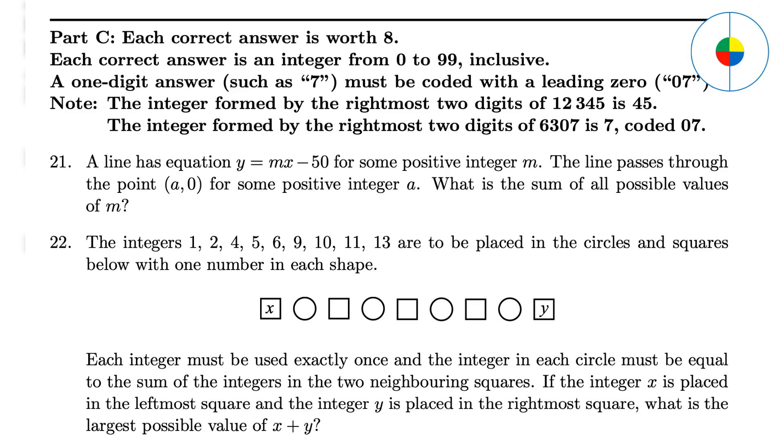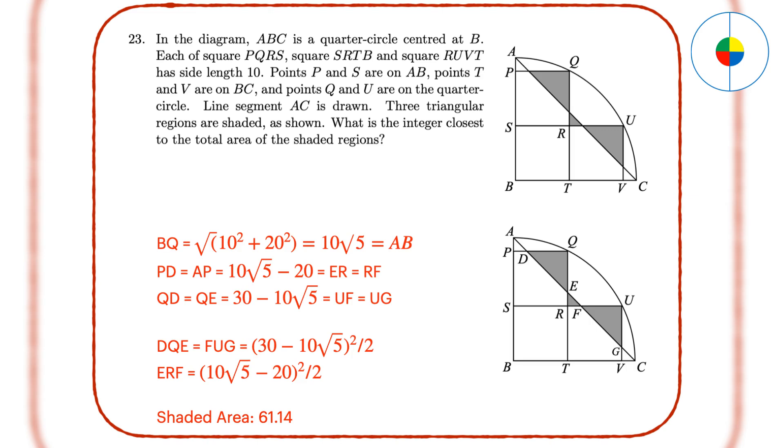Question 22: This is the same as the grade 9 question. The answer is 20. Question 23: This is a complex graph question. You need to figure out the shaded area of a graph. Use Pythagorean theorem. You can calculate BQ, which is the radius of the circle. Then you can calculate AP, PD, QD, and other sides of those shaded triangles. Eventually, you can calculate the total area of the shaded regions, which is close to 61.